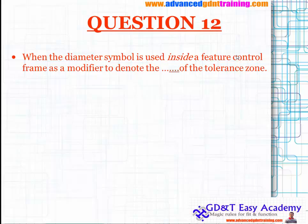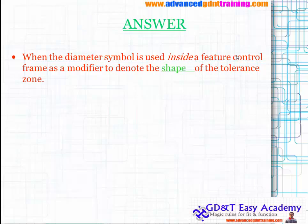The last question: when the diameter symbol is used inside a feature control frame as a modifier, it denotes the shape of the tolerance zone. Hope you enjoyed the whole 10-part series. If you go through all 10 to 11 different video series available in my channel, you can clarify and answer all these questions. Thank you.